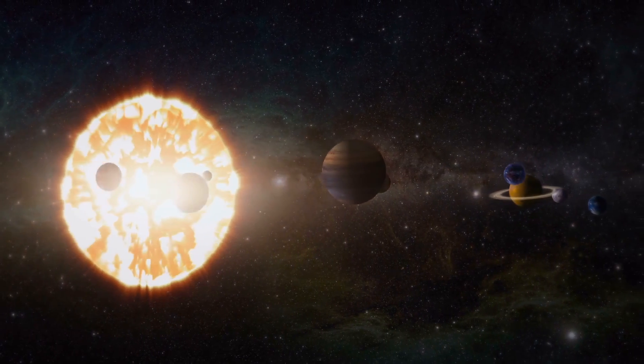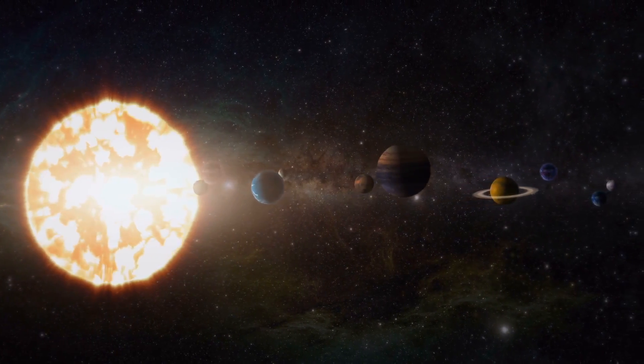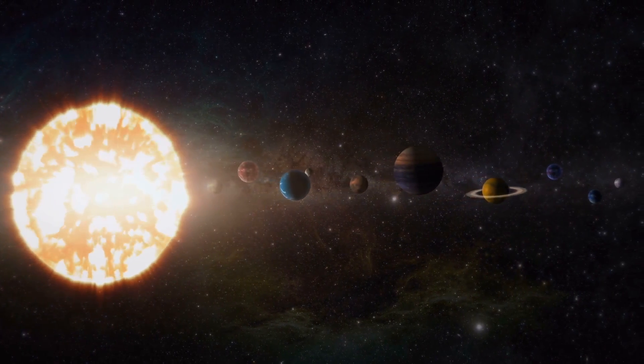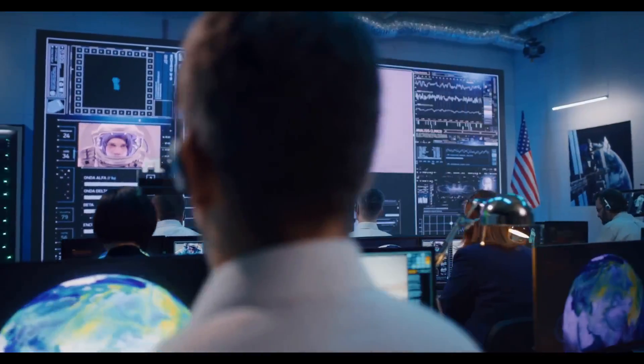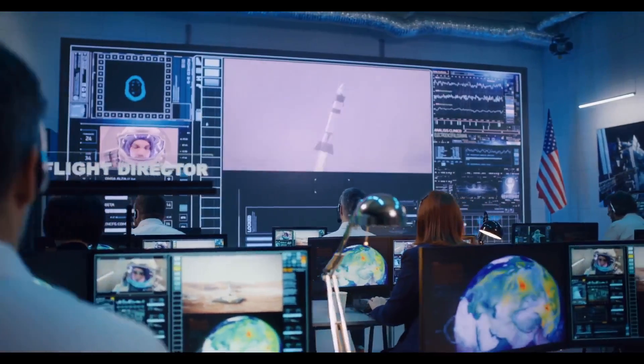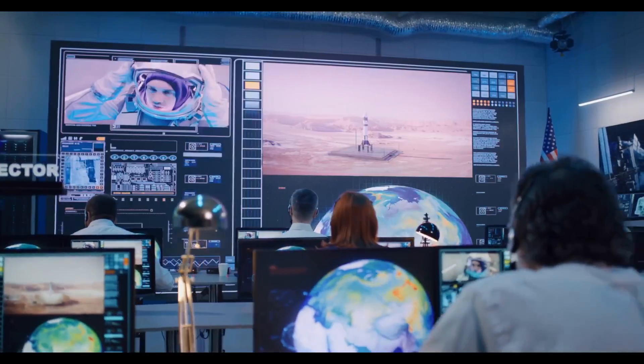When it reaches perihelion, 3i Atlas will be roughly 1.4 astronomical units from the Sun, slightly farther than Earth's orbit. At that distance, the object will experience its maximum acceleration and heating, bombarded by solar wind, electromagnetic radiation, and intense plasma interactions. These forces may strip material from its surface, alter its structure, or even trigger outgassing events that could dramatically change its brightness. But for now, we can only speculate. With the Sun's brilliance hiding it completely, no telescope on Earth can watch as the interstellar traveler meets its moment of closest approach.